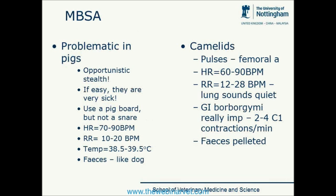To assess our patients, the primary survey isn't going to differ by species, but when we move on to the secondary survey we're going to want to do a major body system assessment. I'll start with pigs because they are probably the most difficult large animal patients to examine. The first thing to note is: if they're easy to examine, they're very sick and may be close to not being with us anymore. If they aren't that sick, you need to use opportunistic stealth and patience to do your examination.